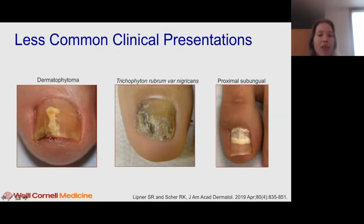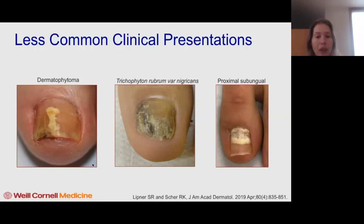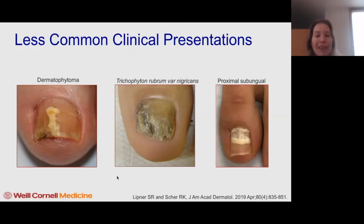They present with either a streak — a yellow streak or a white streak — or a patch in the nail, and that's a clue that this is a dermatophytoma. And if you were actually to do a clipping on this and send it to your dermatopathologist, you would be able to see these tightly packed hyphae.